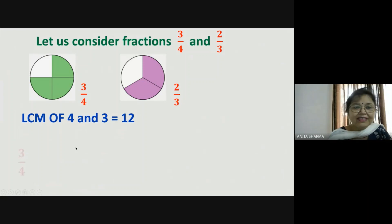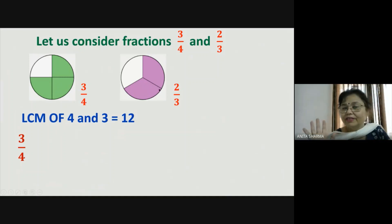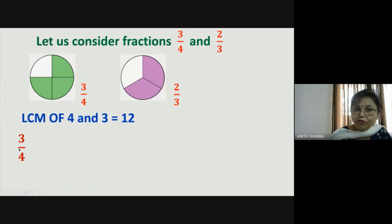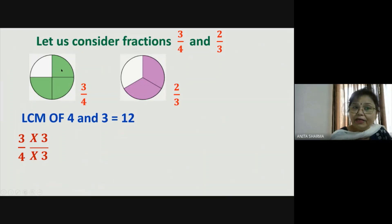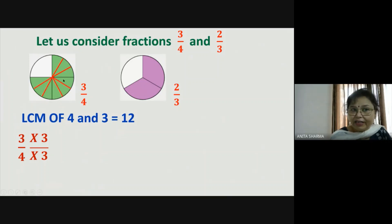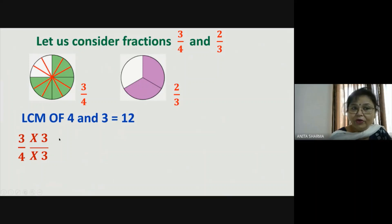We divide both wholes into twelve parts. For three-fourth, we multiply the numerator and denominator by three, so each of the four parts is divided into three smaller parts. The three shaded parts become nine parts, and the four total parts become twelve. So three-fourth is equivalent to nine-twelfth.